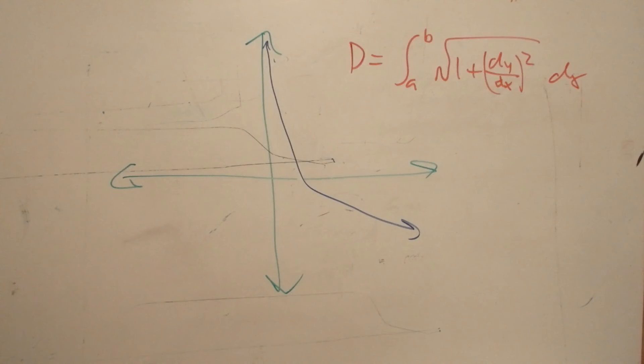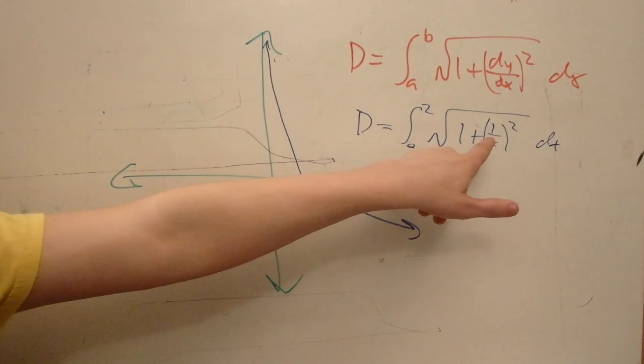So what I've written here is a general distance formula. And so what we can do now is we can just plug in some numbers. Just remember, this is the negative ln of x. The derivative of that is negative 1 over x. And the negative 1 over x squared can be represented by that.